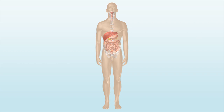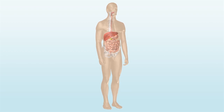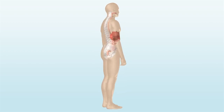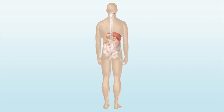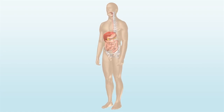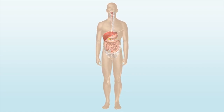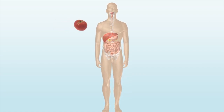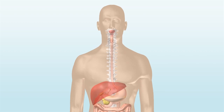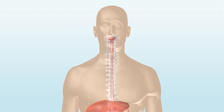Your digestive system consists of all the organs involved in breaking down the food you eat, absorbing nutrients and eliminating waste products. When you take a bite of food, your digestive system is activated automatically.